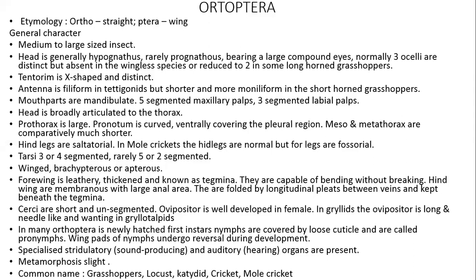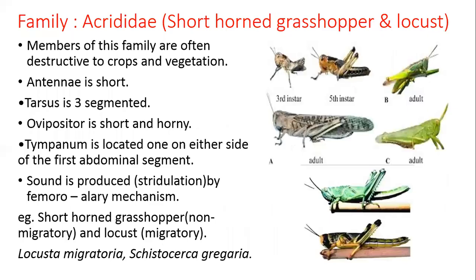Examples include grasshoppers, locusts, mantids, crickets, mole crickets, etc. Four major families are included in this group. Family number one is Acrididae — for the short-horned grasshoppers and locusts.